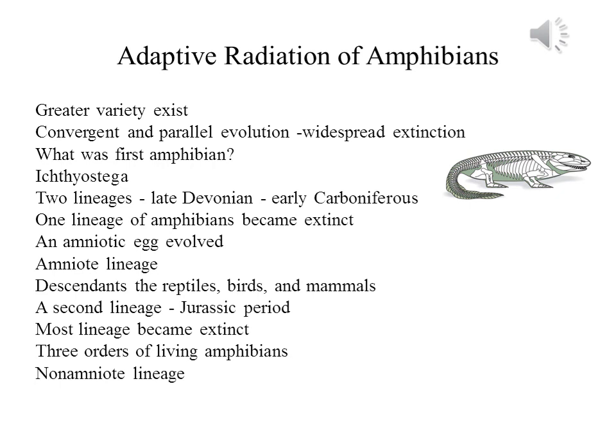The adaptive radiations of amphibians resulted in much greater variety of forms than exist today. Later, convergent and parallel evolution and widespread extinction clouded evolutionary pathways. No one knows, therefore, what animal was the first amphibian. But the structure of limbs, skull, and teeth suggests that Ichthyostega is probably similar to the earliest amphibians. This is the picture of Ichthyostega.